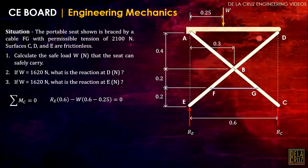So we have 0.6 minus 0.25. Expressing RE to W is 7 over 12 of W. Now let's compute RC in terms of W. Summation of forces vertical should be zero. We have RE which is 7 over 12 W plus RC minus W.